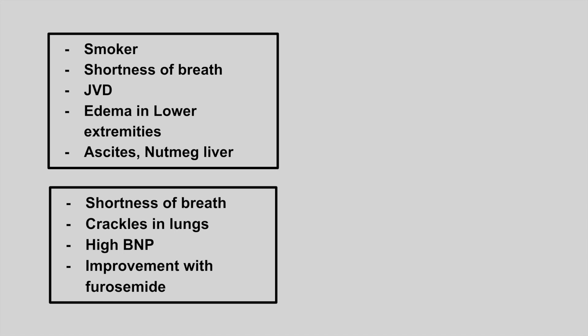The next one is a smoker with shortness of breath, jugular venous distension, edema in the lower extremities, ascites, and a nutmeg liver. This is right heart failure. In right heart failure, edema builds up in the systemic circulation. COPD is one of the causes of right heart failure.